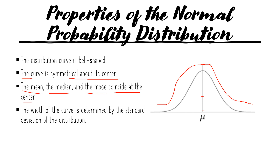The third property: the mean, median, and mode coincide at the center. When dealing with the normal curve, there is only one value for the mean, median, and mode, which is equal to zero. The fourth property: the width of the curve is determined by the standard deviation, because the value of the standard deviation tells us how spread our data will be — how big or small the differences between our data points are.